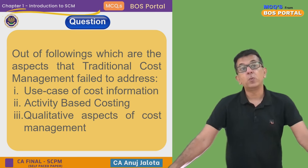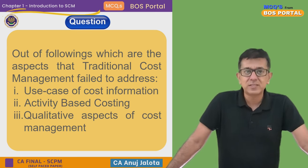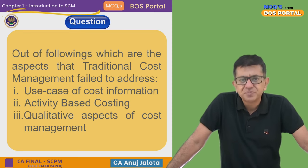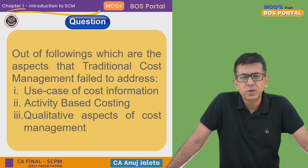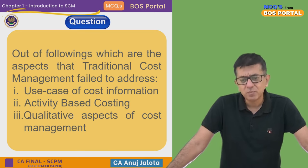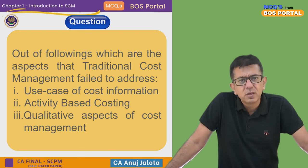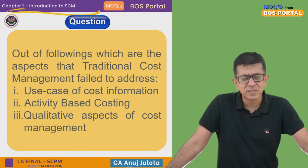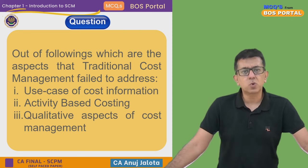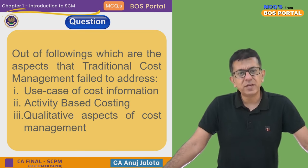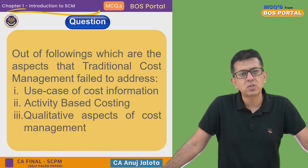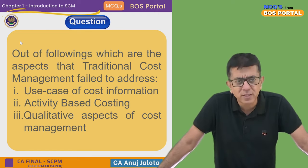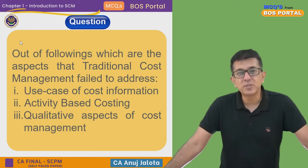Out of the following, which are the aspects that traditional cost management fails to address? Traditional cost management only says how do you get more profit — you get more profit by reducing your cost, controlling your cost, nothing else. It uses cost as a way to increase profit: lower the cost, better it is.